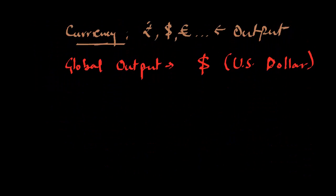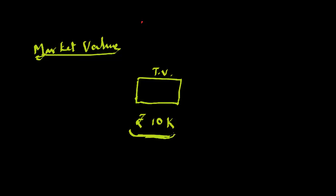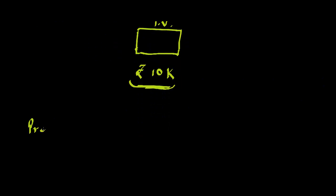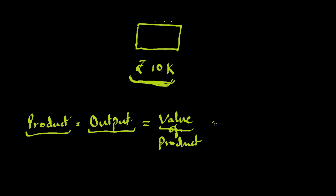While assigning market value, let's say we have a TV here and its value is 10,000 rupees. This 10,000 rupees is the value of this product, and as the product is equivalent to output — the output of the factory or the economy — the value of output is equal to the value of the product.